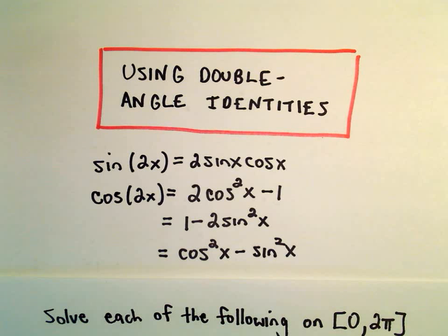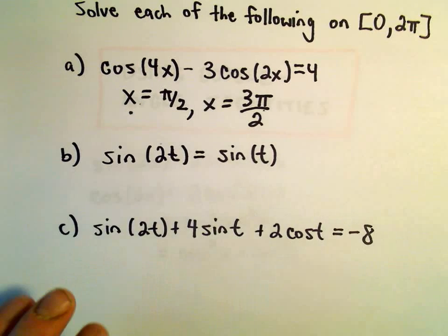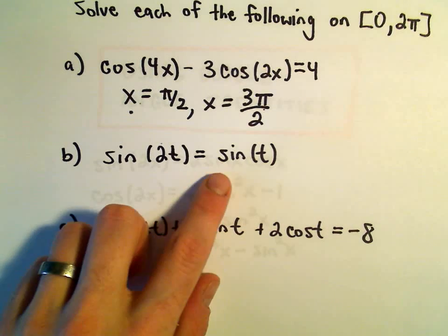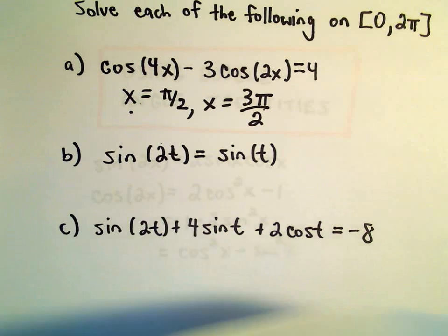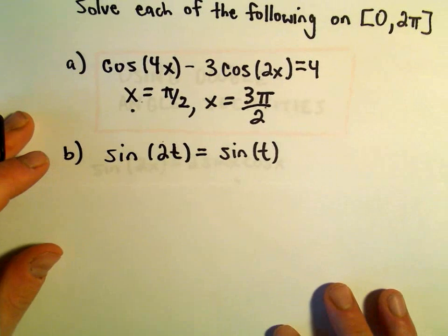Okay, so another example here of using a double angle identity to solve a trig equation. So here we're going to solve sine of 2t equals sine of t. And again, we're going to find solutions on the interval 0 to 2 pi. This one will actually be, I think, a little less involved than the first one.